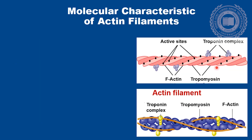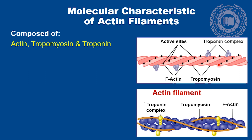Next are actin filaments, which are the thin filaments in a sarcomere. They are composed of actin, tropomyosin, and troponin complex. As you see in the upper diagram, the light pink components are actin, dark pink are tropomyosin, and the three circular components are the troponin complex. In the lower diagram, this is the model of actin filament — blue are the actin, orange are tropomyosin, and yellow are troponin complex.